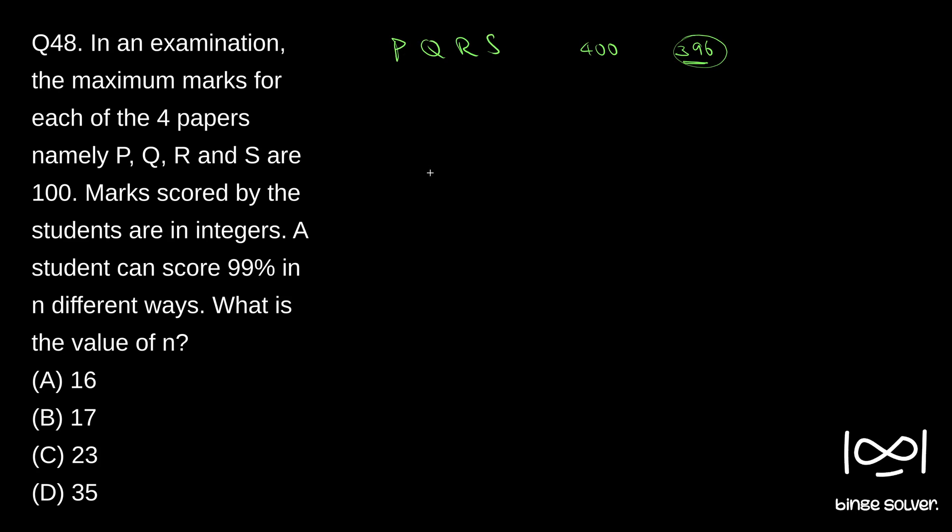So this is a classic case of combination with repetition. That is, we have to select four papers. The four papers can be P itself or it could be P, Q, R, S or two P's and two Q's or one P, one Q, two R's and one S. We just have to pick four papers from this and repetition is allowed. This is a classic case of combination with repetition.